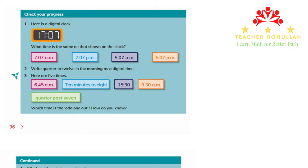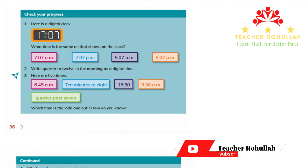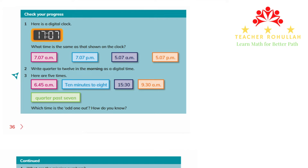Hello and welcome to today's lesson. In this lesson, I'm going to work on the last part of Unit 2 of Cambridge Primary Mathematics Learner's Book 4. This part is aimed to check a student's progress or understanding of the whole unit.